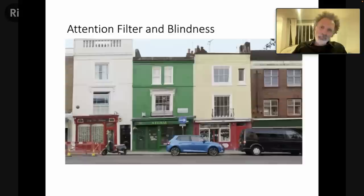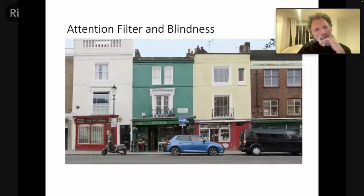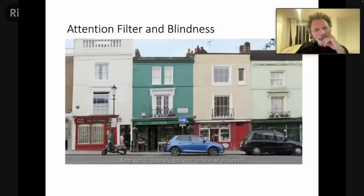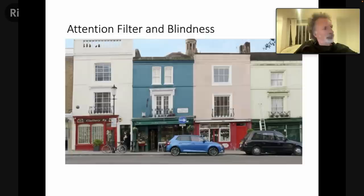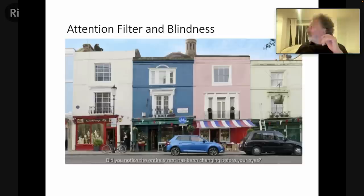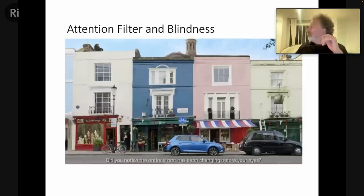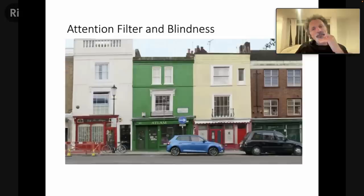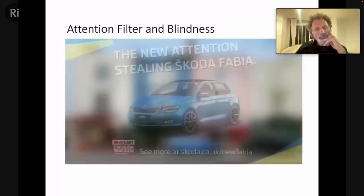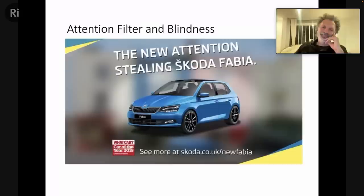To test how much attention the attention-stealing design of the new Skoda Fabia actually steals, we left one parked on an ordinary road in West London. We wanted to see if its sharp crystalline shapes, bold lines, lower wider profile, 17-inch black alloy wheels, and angular headlights would attract attention. But did the attention-stealing design distract you from noticing that the entire street was changing right before your very eyes? Did you spot the van changing to a taxi, the scooter changing to bicycles, or the lady holding a pig? The entire street was completely different. Proof that the new Skoda Fabia is truly attention-stealing.